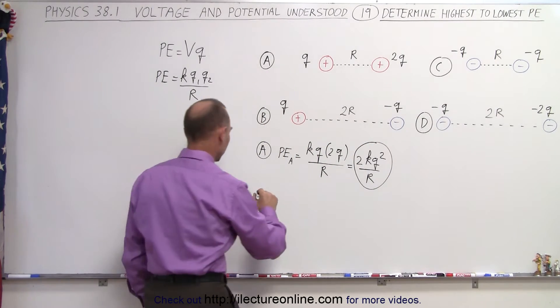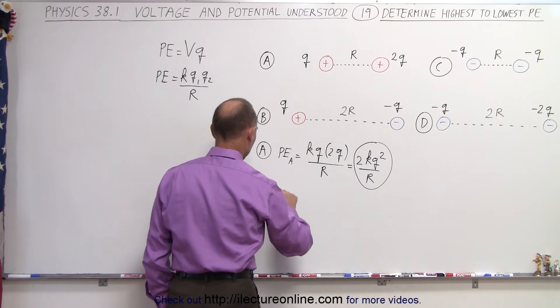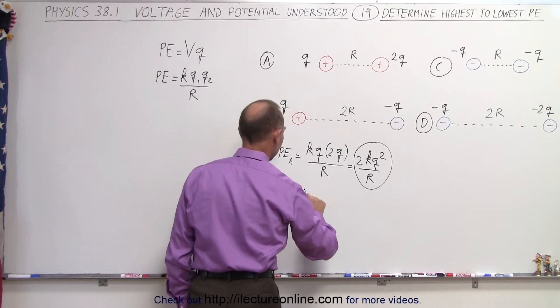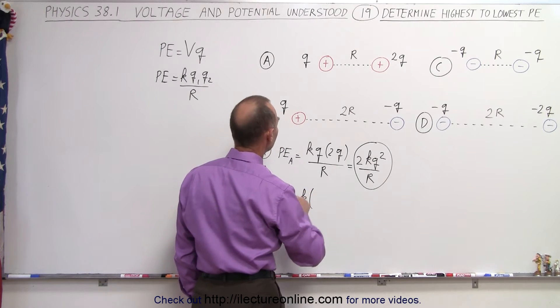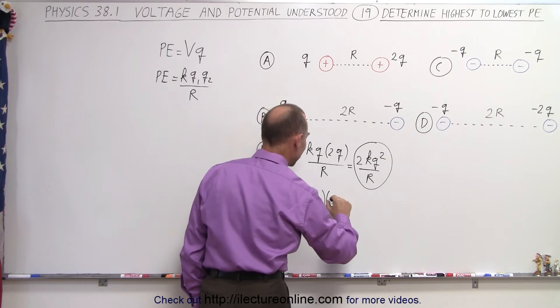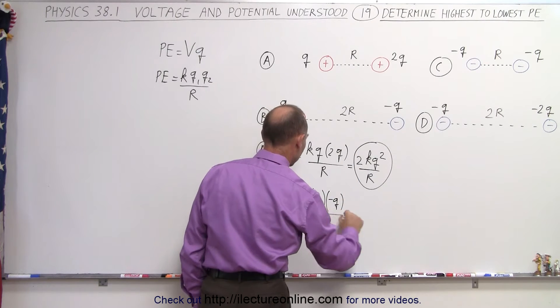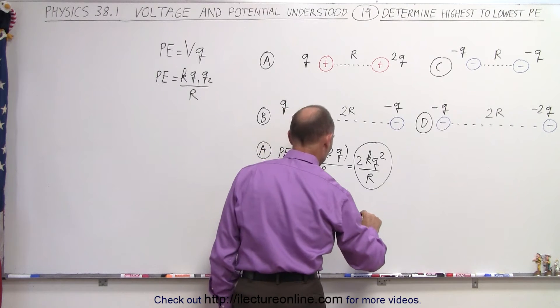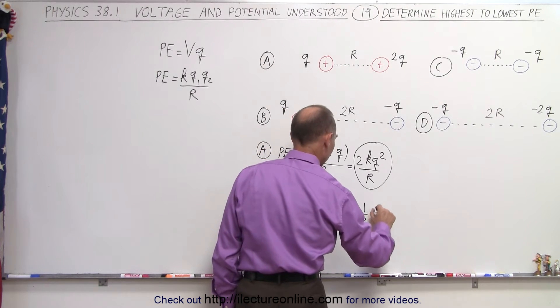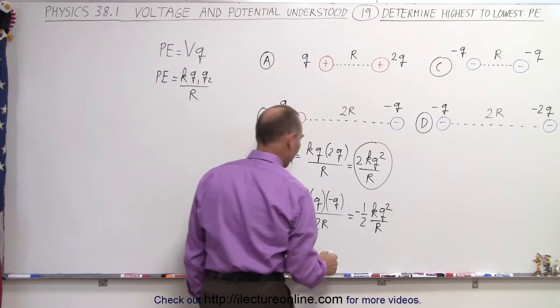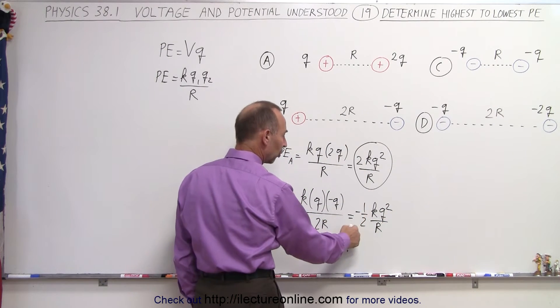Now let's do it for B. For B, we call it potential energy B, is equal to K times Q1. Q1 will be Q, and Q2 will be a negative Q, divided by the distance between them, which is 2R. So in this case, that's going to be minus 1 half KQ squared over R. So obviously smaller in magnitude, but it's also negative.